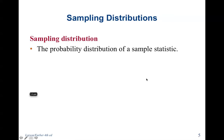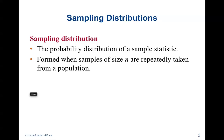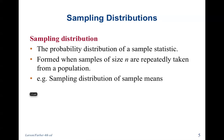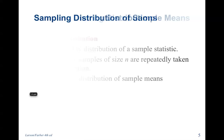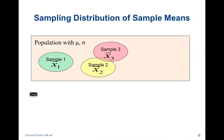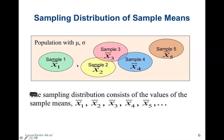A sampling distribution is the probability distribution of a sample statistic. It is formed when samples of size n are repeatedly taken from a population. In the sampling distribution of sample means, I have a larger population and I take little samples inside — no longer is each person in my sample going to be x. X is going to be the mean of each of those little samples.